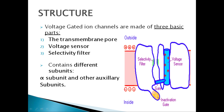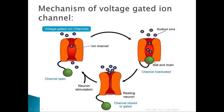If we see the structure of voltage-gated ion channels, they are made of three basic parts: the transmembrane pore, voltage sensor, and selectivity filter. They contain different subunits — alpha subunits and other auxiliary subunits — visible in the diagram. Regarding their mechanism, when the channel is inactivated, the ball is placed in the pore. In the resting neuron stage, the channel is closed. When there is a neuron stimulation, the channel opens and allows the passage of ions through it.